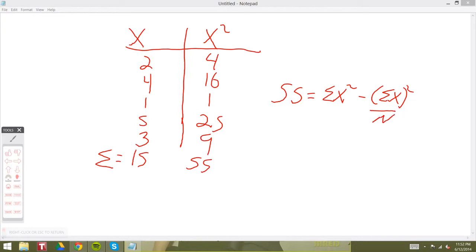And simply plug everything in. So we have 55 here minus 15 squared, and that is divided by 5 because we have five data points in our sample.